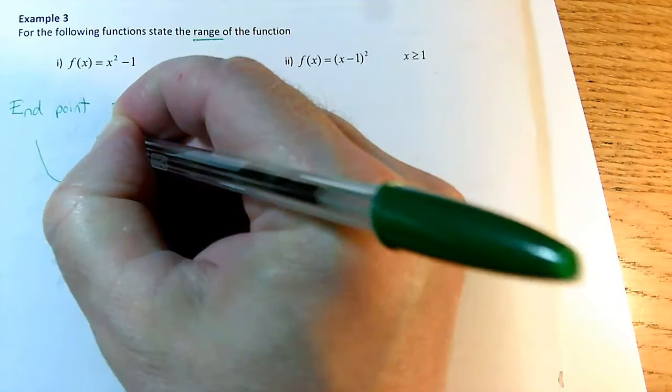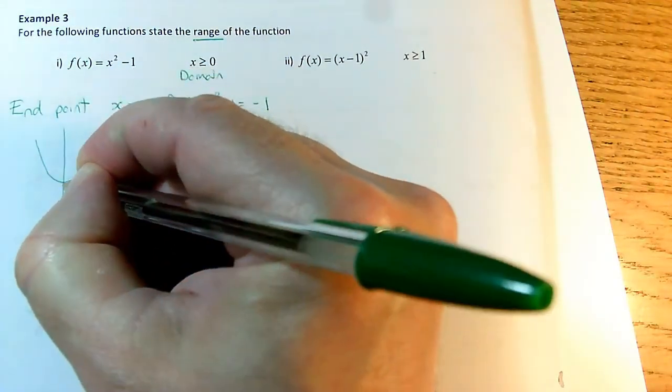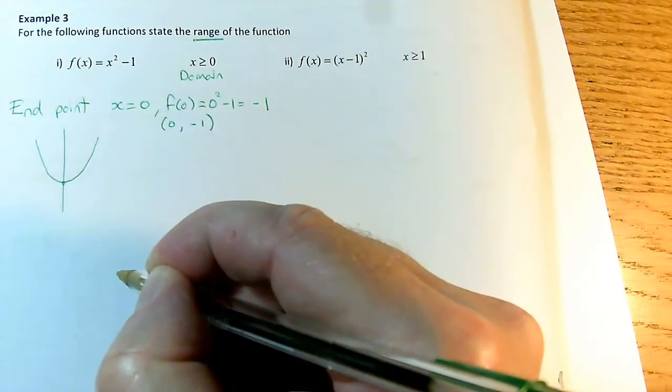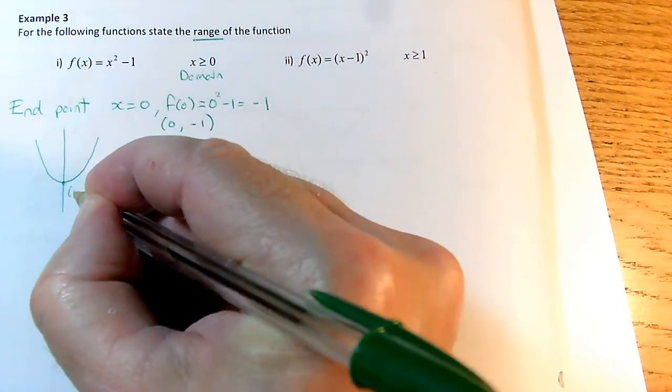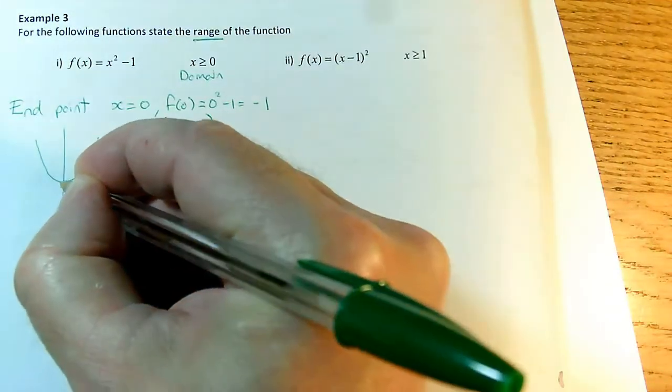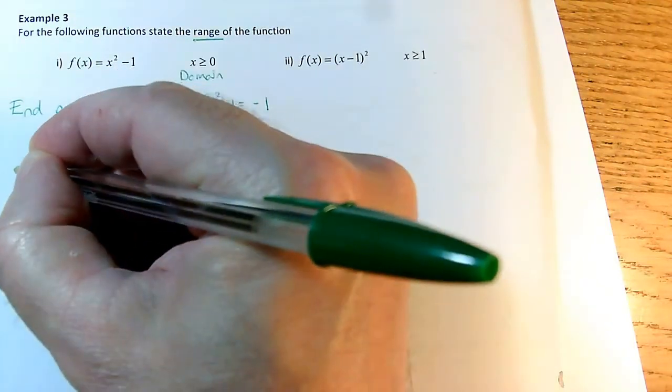It's a vertical translation, so I'm pretty sure that this point is going to be on the y-axis. And in fact, this is the point when x is 0. It's actually that point I've already found, the point (0, -1). This must be a y-value of -1, and my graph looks like this.